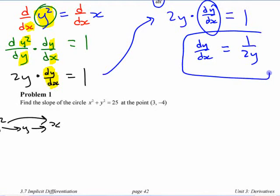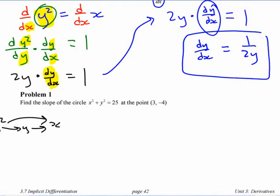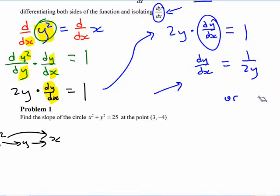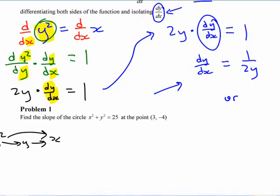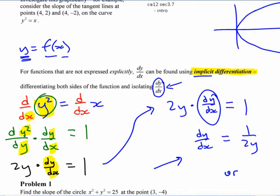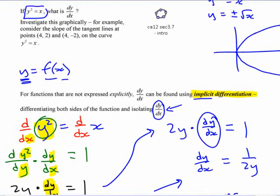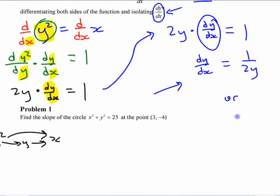This is the derivative. You could actually change it. You can leave it like this if you want, or you can write it as... You can replace the y with what it says it's equal to. What could you say that the y is equal to there? y is equal to the square root of x, so you could say that this is 1 over 2 square root of y, but it would have to be... It's not y, it's x. But it would have to be plus or minus because y is plus or minus.